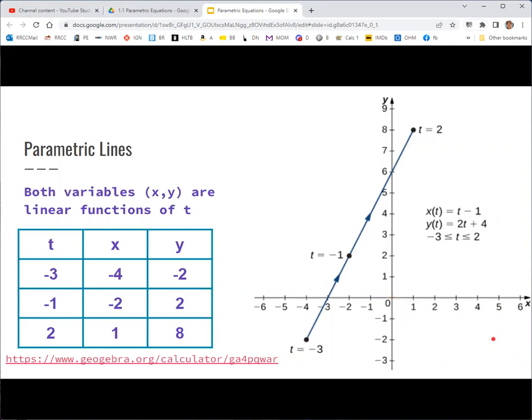A straight line or line segment would have x and y both be linear functions of t. If x and y are both linear functions of t, then you're just going to draw out a straight line. If t is limited on some closed bounded interval, like negative three to two, then it'll be a line segment.